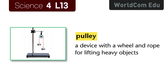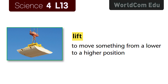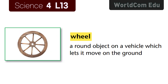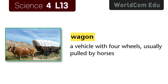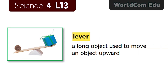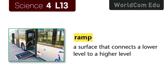Lesson 13: Work. Pulley — a device with a wheel and rope for lifting heavy objects. Lift — to move something from a lower to a higher position. Wheel — a round object on a vehicle which lets it move on the ground. Wagon — a vehicle with four wheels, usually pulled by horses. Lever — a long object used to move an object upward. Ramp — a surface that connects a lower level to a higher level.